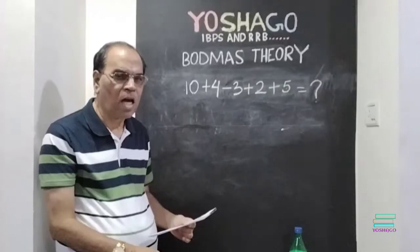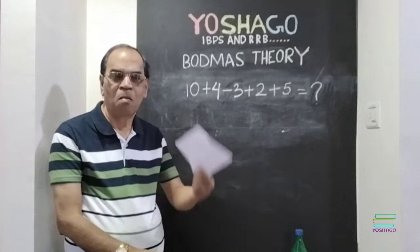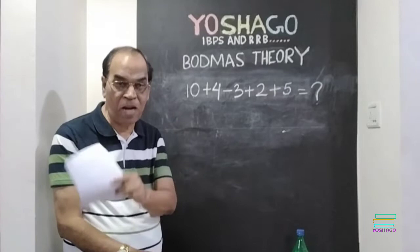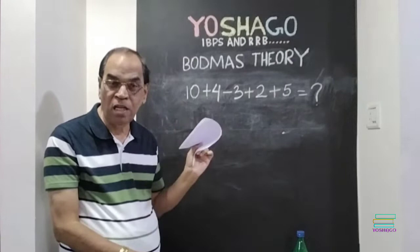Hi friends, last class I have correctly told you what is BODMAS. BODMAS means bracket, of, division, multiplication, addition and subtraction. These seven signs, that is called BODMAS. This is my example. This is the two problems I have solved.